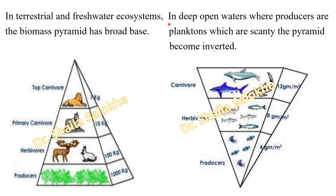In the terrestrial and freshwater ecosystem, the biomass pyramid has a broad base. The producers are about 1,000 kg, herbivores about 100 kg, primary carnivores 10 kg, and top carnivores 1 kg. While in deep open waters where producers are phytoplankton which are scanty, the pyramid becomes inverted — producers are 4 g per meter square, herbivores are 8 g per meter square, and carnivores are 12 g per meter square.